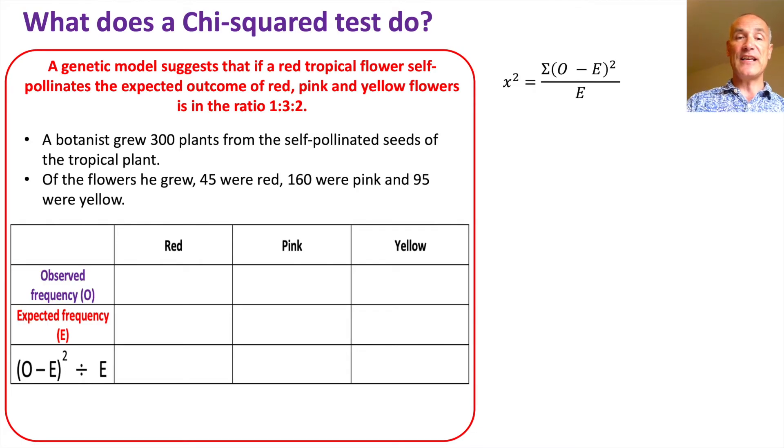Let's look at table results and put the values in and see. We had 45 red was the observed, we had 160 pink, and we had 95 yellow. Now we have to calculate the expected frequency using the model. And this is a ratio of 1 to 3 to 2. So all together that's 6.